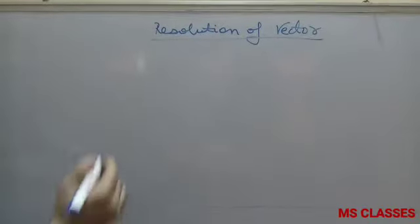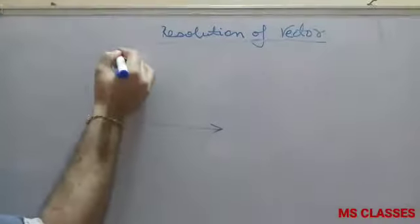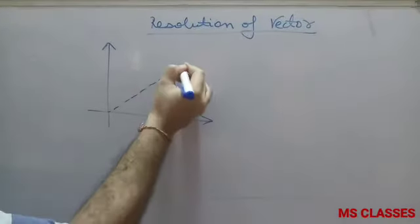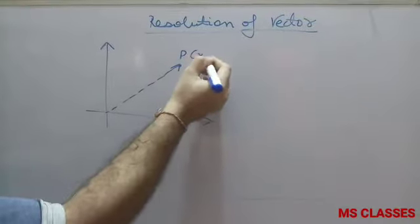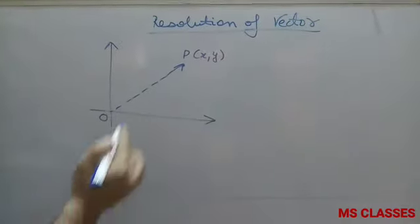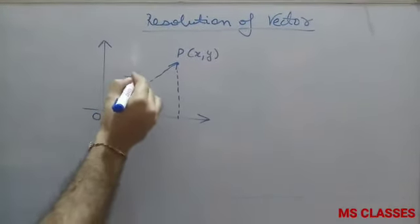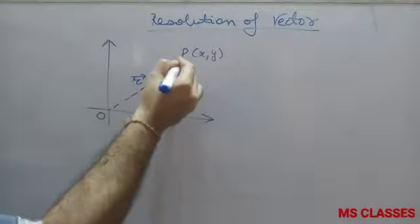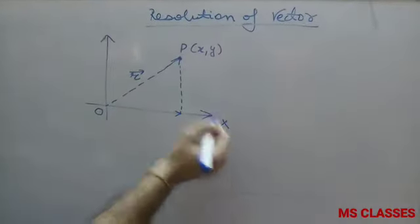Resolution of vectors means finding the components of a vector. Here I have point P with coordinates x, y. This is origin O, and OP is the position vector representing the position of point P. This is the x-axis and y-axis.